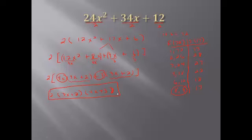This takes a lot of steps — you can also use trial and error, or a method called 'bottoms up.' Problems with a leading coefficient other than one in front of x squared take more work. Make sure you practice your factoring and keep working hard.